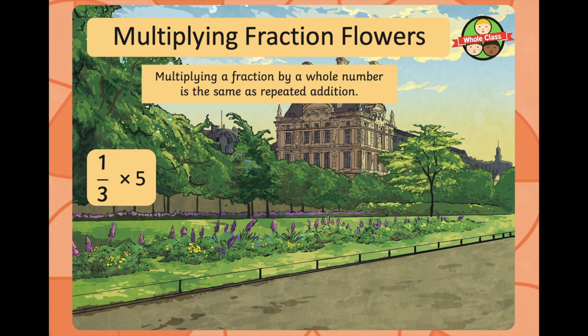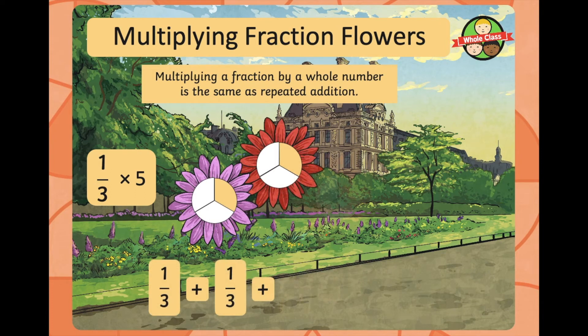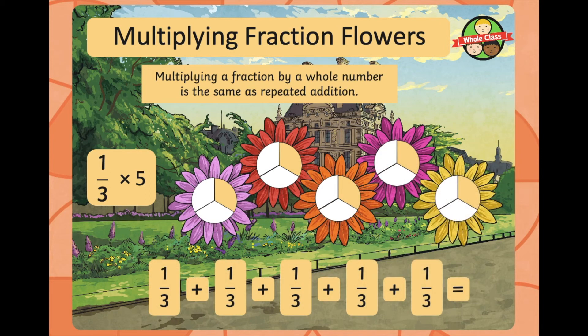So, multiplying fraction flowers. Multiplying a fraction by a whole number is the same as repeated addition. So, we've got here one third times five. And that's the same as adding one third five times, which equals five thirds. So, that's an improper fraction.